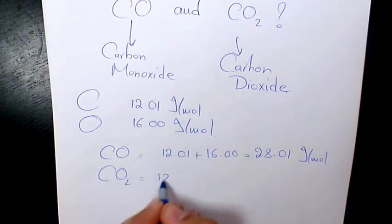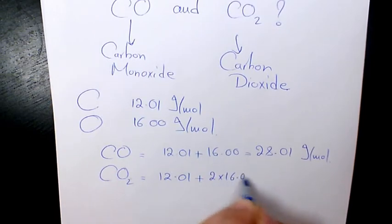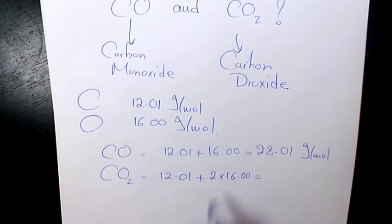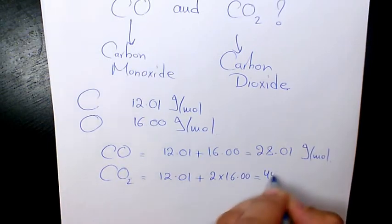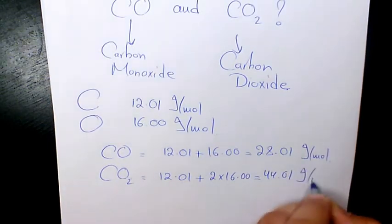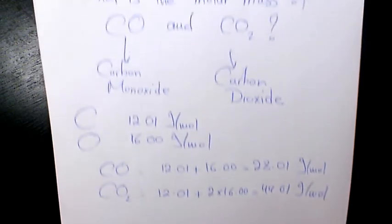Carbon dioxide has one atom of carbon and two atoms of oxygen, so it's going to be 32.00 plus 12.01, giving us 44.01 grams per mole. It means that one mole of carbon dioxide has 44.01 grams of carbon dioxide.